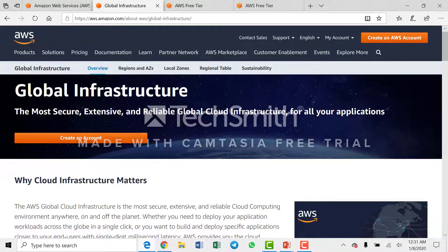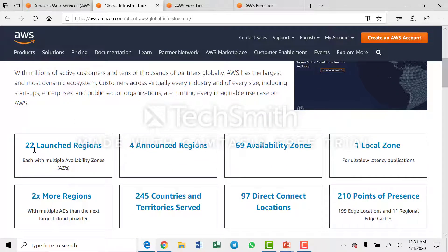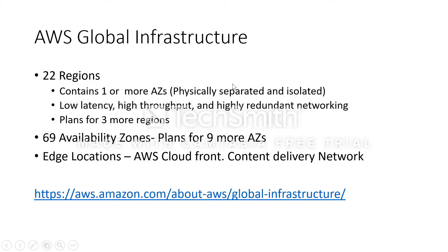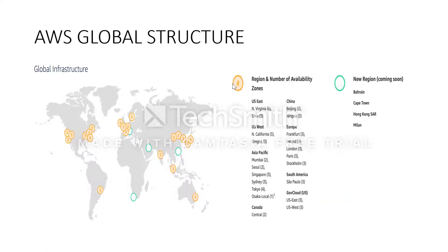We can actually see this on the AWS website. We have about 22 launched regions and four more announced regions, and 69 availability zones, serving about 245 countries. On the global infrastructure map, for example, in the US East North Virginia region you have six availability zones, and in the Ohio region you have three availability zones. Note that this particular slide is a slightly older one, so newer numbers may differ.